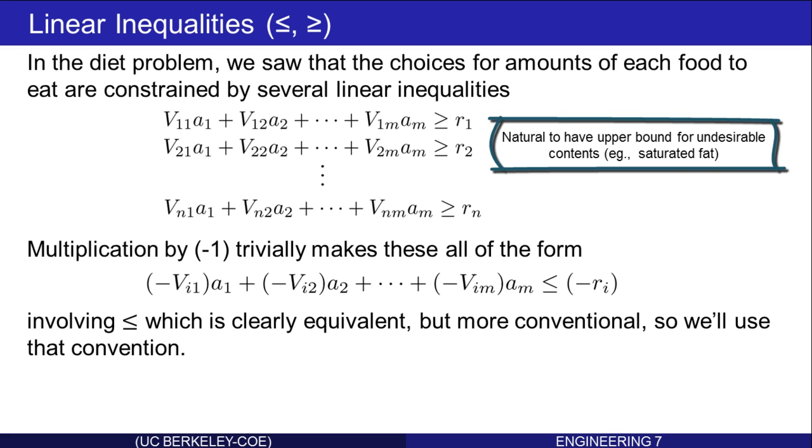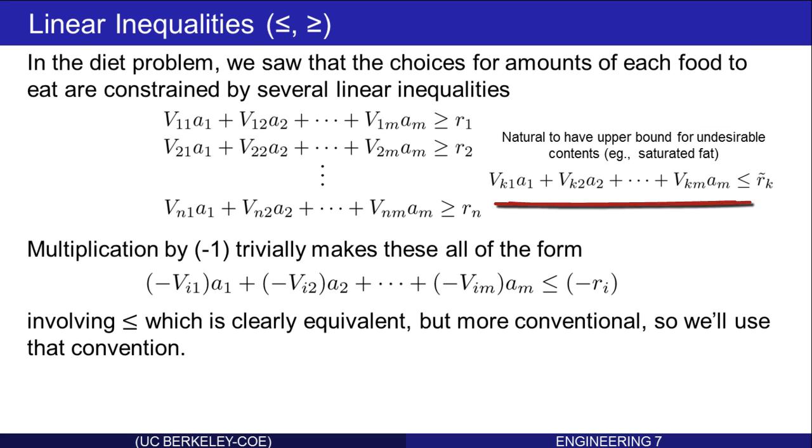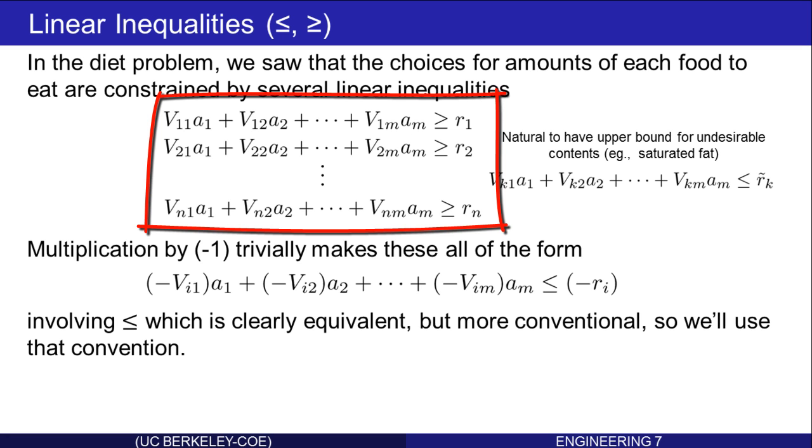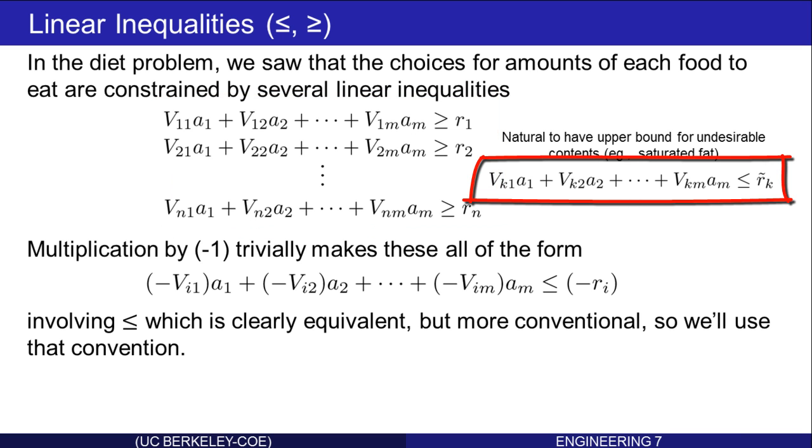Although we didn't formulate it in the diet problem, it would have also been natural to have upper bound inequalities for undesirable contents, suppose saturated fat. The point here is that in the natural problem formulation, there will be many linear inequalities. Some will involve greater than or equal to, some will involve less than or equal to. Simply by multiplying by negative 1, or moving terms from one side of the equation to the other, they can all be expressed as linear combinations of the decision variables should be less than or equal to a given fixed quantity. And that's the convention that we'll use from here on.